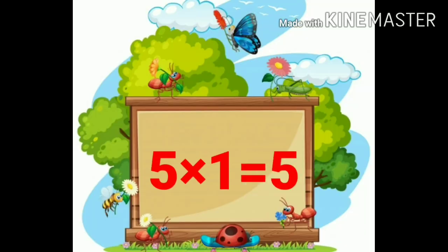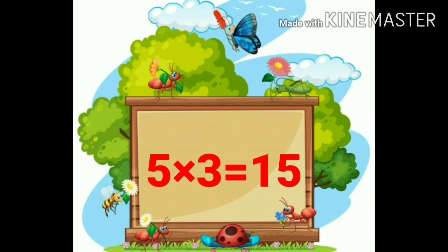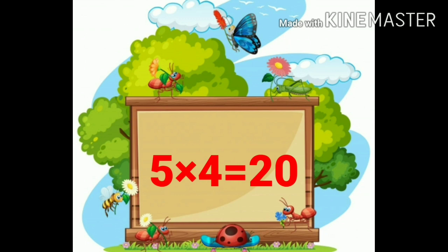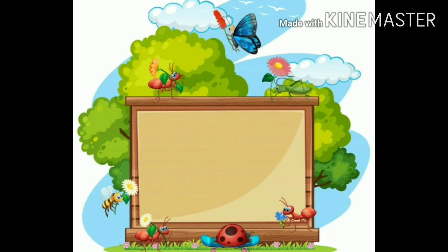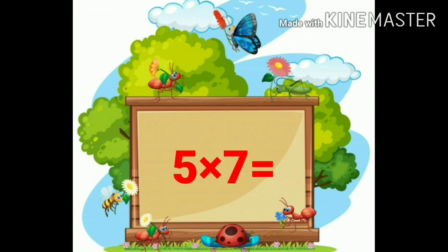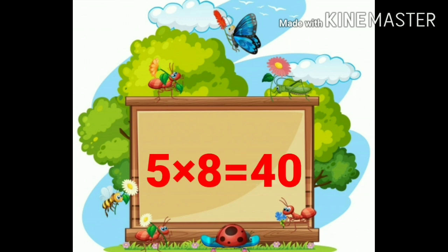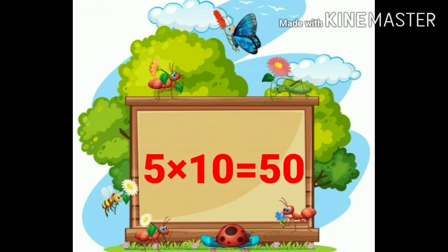Five ones are five. Five twos are ten. Five threes are fifteen. Five fours are twenty. Five fives are twenty-five. Five sixes are thirty. Five sevens are thirty-five. Five eights are forty. Five nines are forty-five. Five tens are fifty.